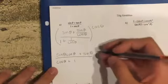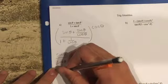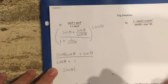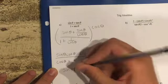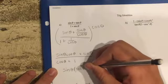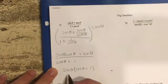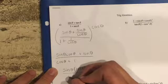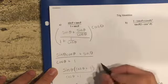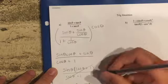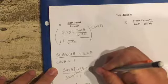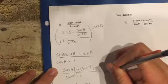The next step would be the top here — you can take a sine out of all of those. So it's sine of theta times (cosine of theta plus 1) all over (cosine theta plus 1). These now cancel and you are left with sine of theta.